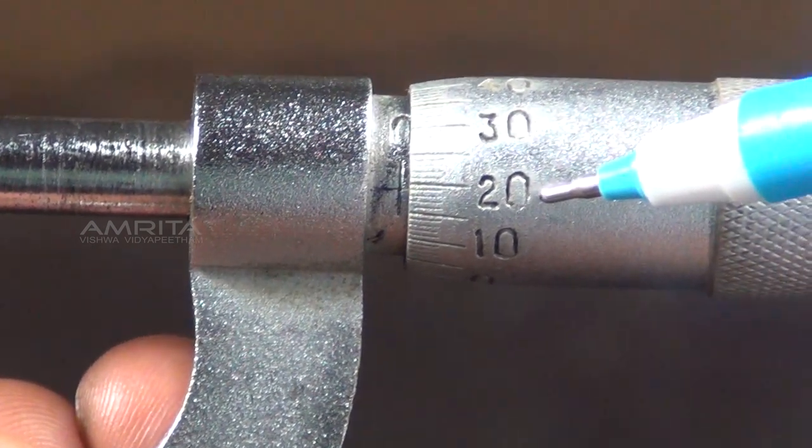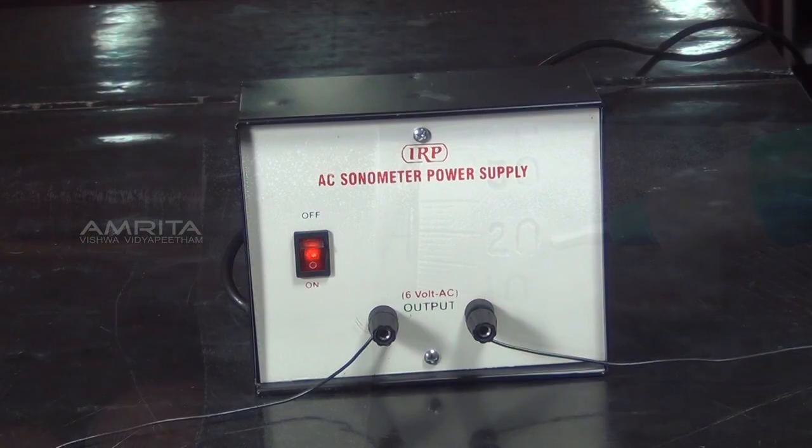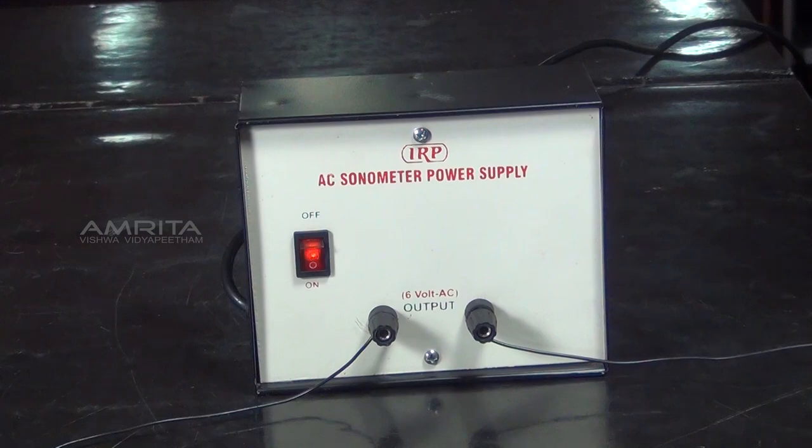By knowing the linear density M of the wire, the frequency of AC mains supply is calculated using the formula ν is equal to 1 by 2 into root of g by M into root of M by L square.